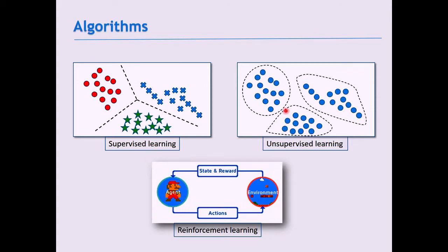In supervised learning, there is a supervisor. Think of it like teaching a baby: you show the baby a cat and label it 'cat'. The machine learns patterns from labeled data and predicts on new data. In unsupervised learning there are no labels — you only give the input data, and the algorithm identifies patterns, for example by clustering similar data together.